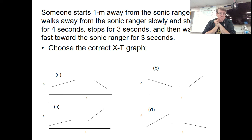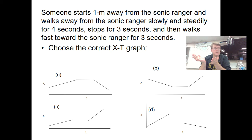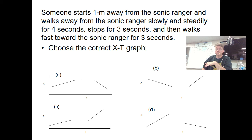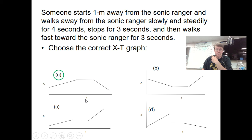This would be similar to a question on the test: choose the correct position versus time graph for a given description of motion. A person starts one meter from the sonic ranger, walks away slowly and steadily for four seconds, stops for three seconds, then walks fast back towards the sonic ranger for the last three seconds. The answer is A. You start near but away from the sensor, travel at constant speed away (up the graph), then stop (flat line), then walk rapidly back — steep and heading down.